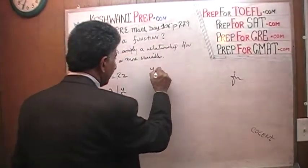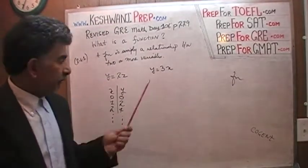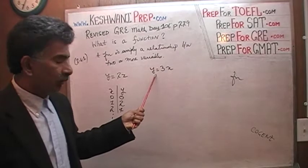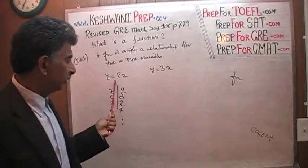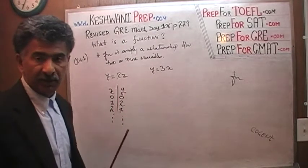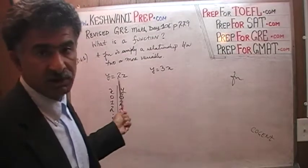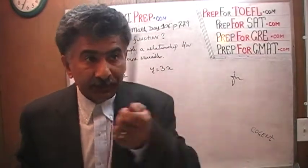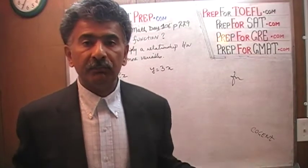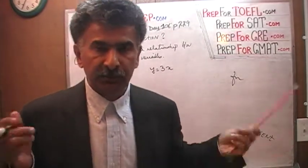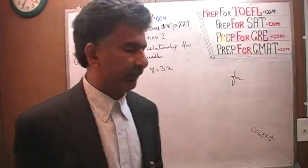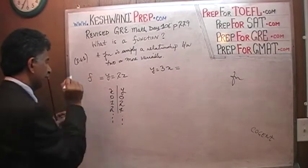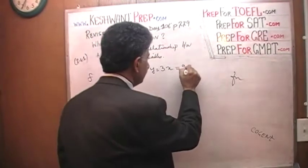There is another relationship: y equals 3 times x. This relationship is different — every time x goes up by one unit, y goes up by three units. I need to distinguish between these two relationships. Just like we give people names in real life rather than saying 'this one' and 'that one,' mathematicians give relationships names. I'm calling the first one f and the second one g.